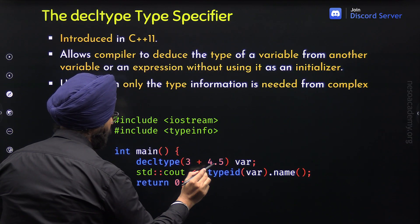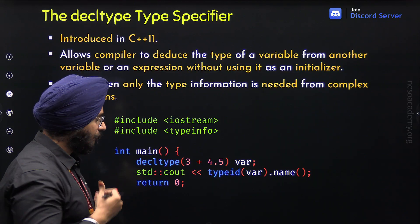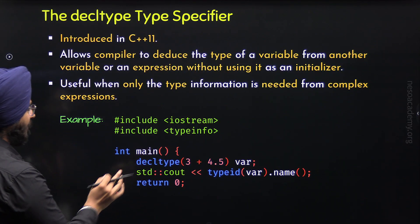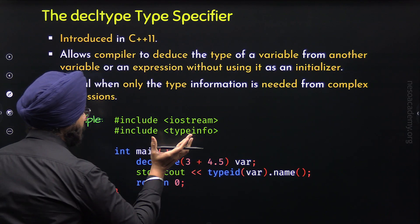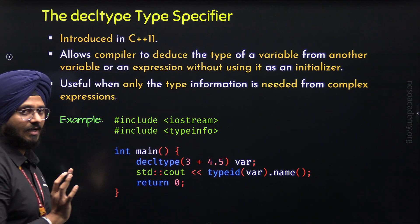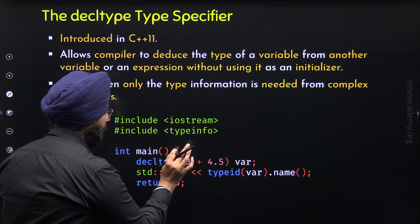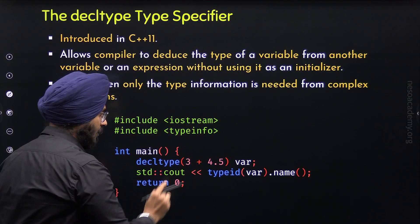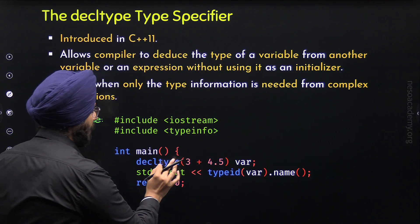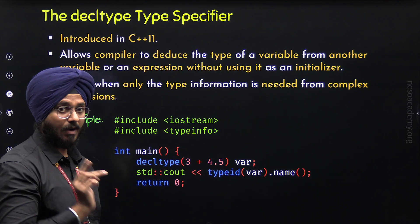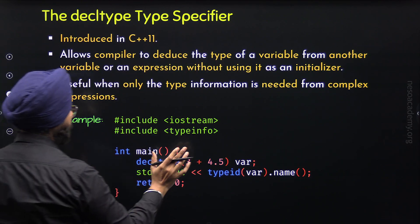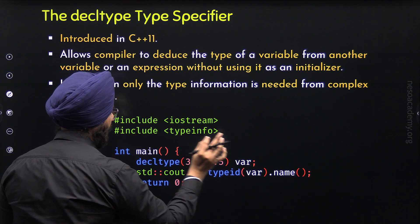Here I have provided the expression 3 + 4.5. This expression will not be evaluated by the compiler — only the type will be deduced from it. If we were to evaluate this expression, we know we get a double value. The integer value will be converted to double, they will be added, and we get a double result. So the compiler knows the type of this variable must be double. Clearly, variable 'var' is of type double.